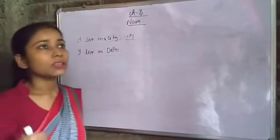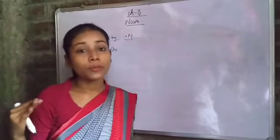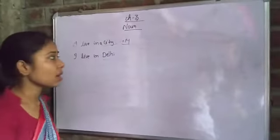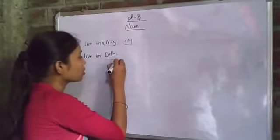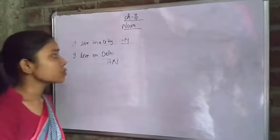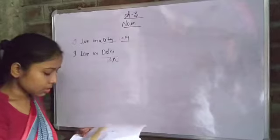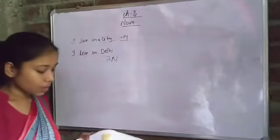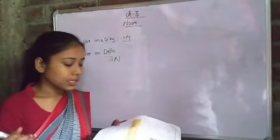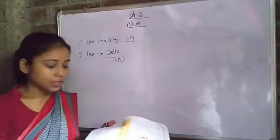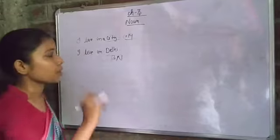'I live in Delhi' — from this we know the particular city is Delhi. Delhi is the name of a particular place, a special name, so this is a proper noun. The word 'Delhi' is a proper noun because it is the special name of a city, and the word 'city' is a common noun.